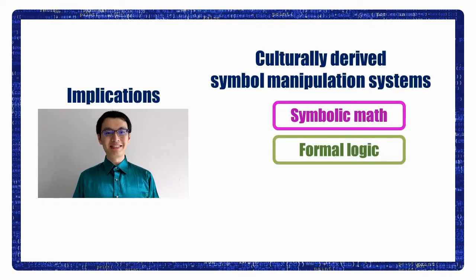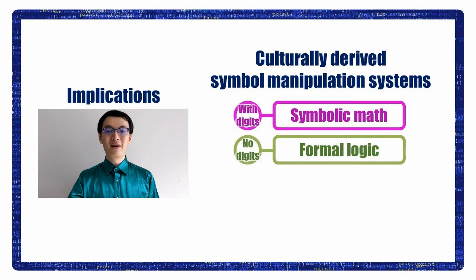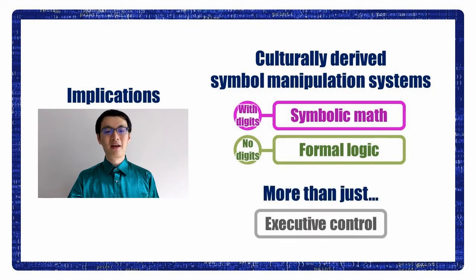So what do our findings indicate? Well, both symbolic math and formal logic are culturally derived symbol manipulation systems. Although symbolic math often involves digits, and formal logic seldom does, they share a great amount of neural resources. Their neural activation may seem similar to the multiple-demand executive control system, but there are definitely something more than executive control. Thank you.